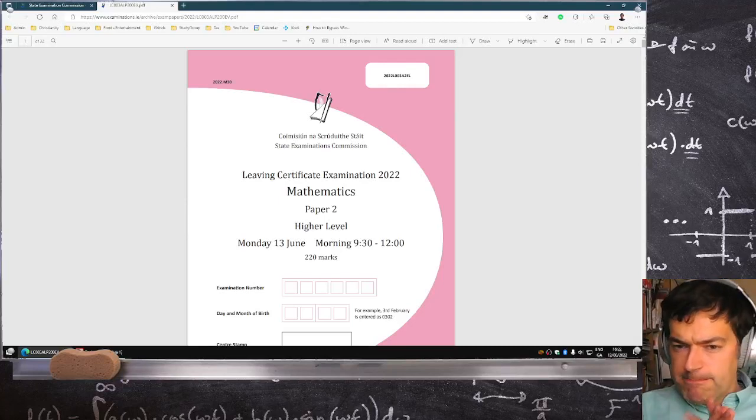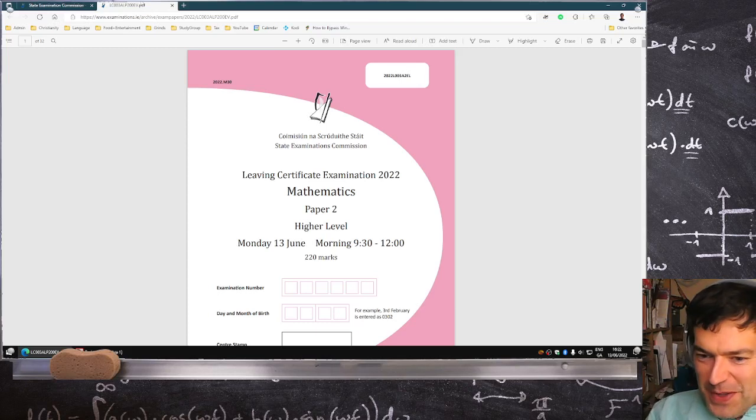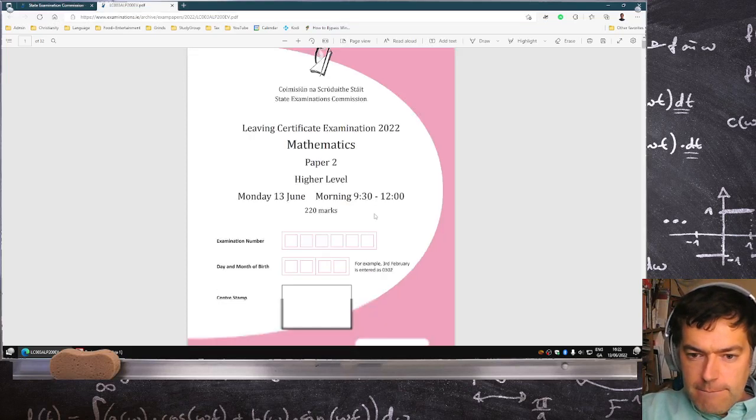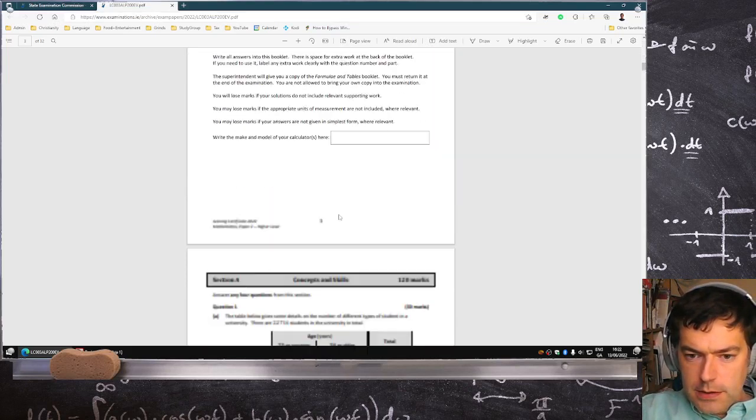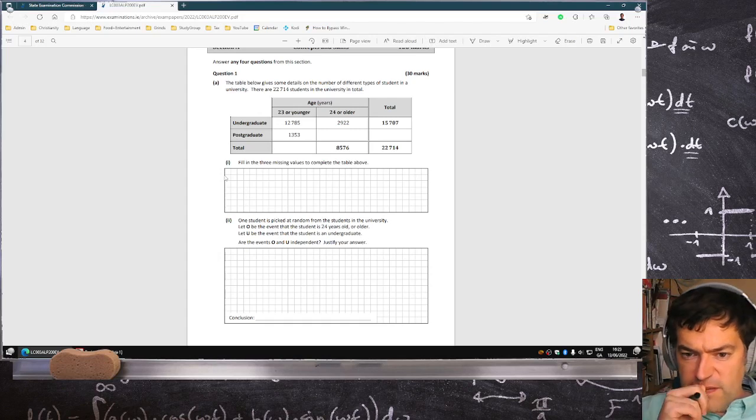Okay guys, I've literally just opened up the exam on this gray Monday, the 13th of June, so let's see what you have to do today. The table below gives some details on the number of different types of students in a university. There are 22,714 students in the university in total. Fill in the missing values to complete the table above.